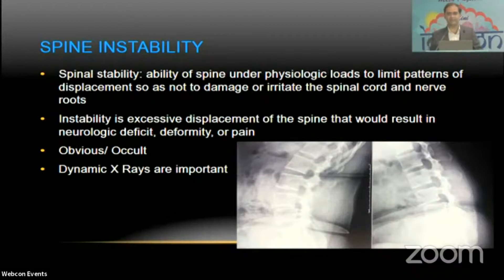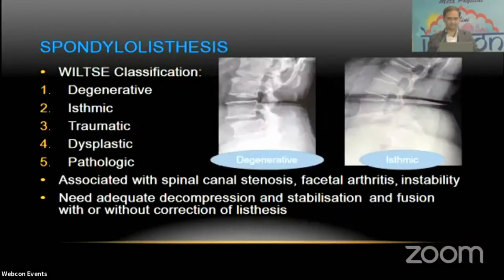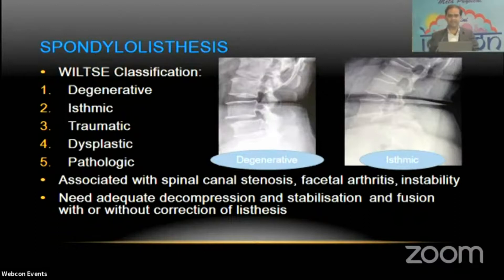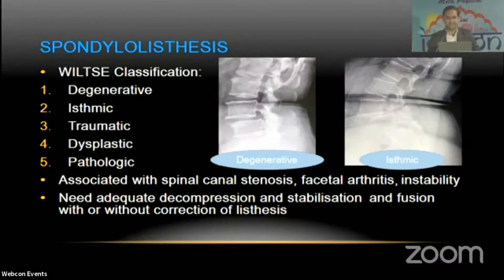Instability can be obvious or occult, and to identify occult instability, dynamic X-rays are important. Spondylolisthesis has many classifications; I describe it as five types: degenerative, isthmic, traumatic, dysplastic, and pathologic. Of these, the degenerative and isthmic types are most commonly encountered in clinical practice. They may be associated with spinal canal stenosis, facetal arthritis, and instability.